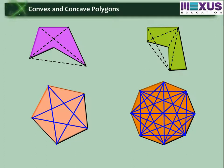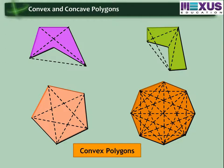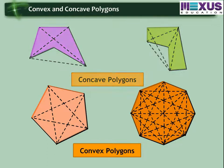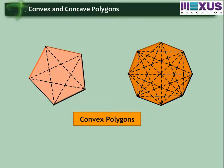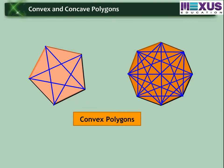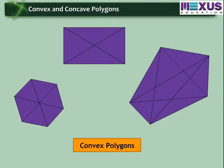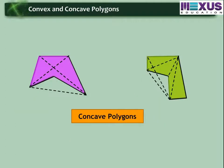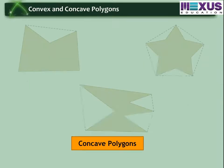On the basis of these, polygons can be classified as convex and concave. A convex polygon is a polygon in which all its diagonals lie in the interior region of the polygon. While a concave polygon is a polygon in which at least one or more of its diagonals lie in the exterior region of the polygon.